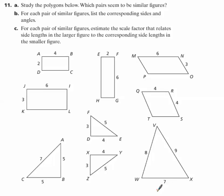So we're looking at Stretching and Shrinking, Investigation 2, ACE number 11. Study the polygons below. Which pairs seem to be similar figures?